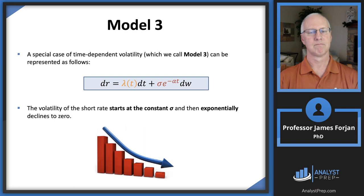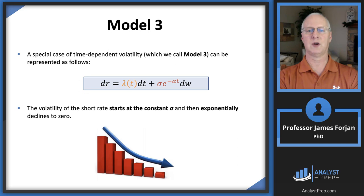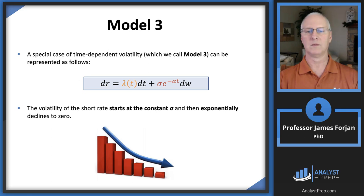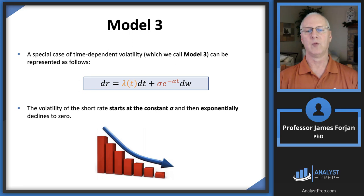Let's take a quick look at Model 3, a special case of time-dependent volatility. We're still looking for the change in short-term rates with a time-dependent lambda drift term. In this special case, we assume the volatility starts at some constant level — say 20% or 40% — and then exponentially declines to zero. We use e raised to the minus alpha times t, where we pick a constant alpha that determines how steeply or gradually the volatility declines toward zero.